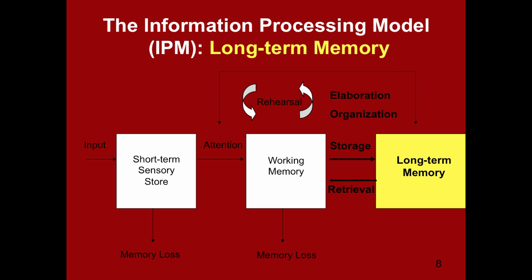This is where the problem lies. When we study for hours the day before a test and just can't remember what we studied, one of two things occurred: either the information got crammed into long-term memory and we can't retrieve it, or it never got into long-term memory at all — it just stayed in working memory through repetition and was lost when we stopped thinking about it. So this begs the question: did we really forget what we learned, or did we not learn it in the first place? How do we maximize working memory and support long-term memory in encoding and retrieving information effectively?